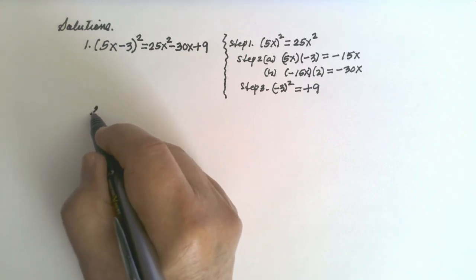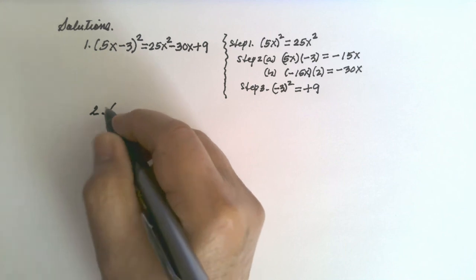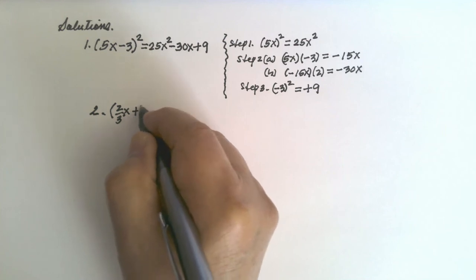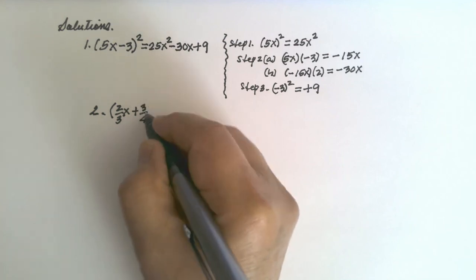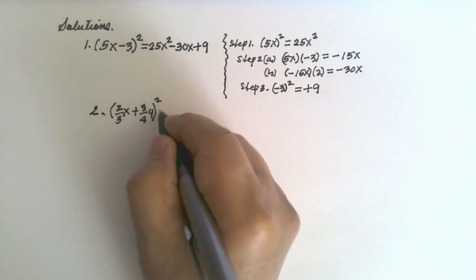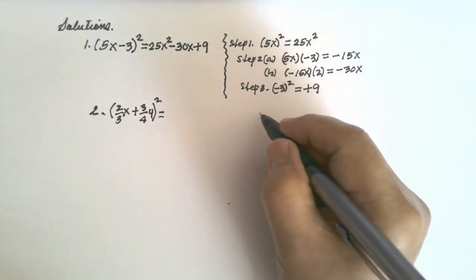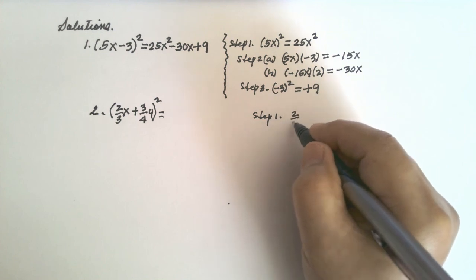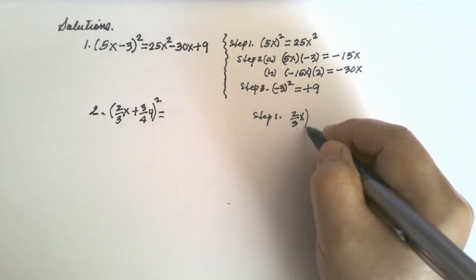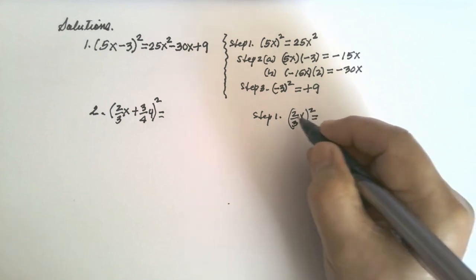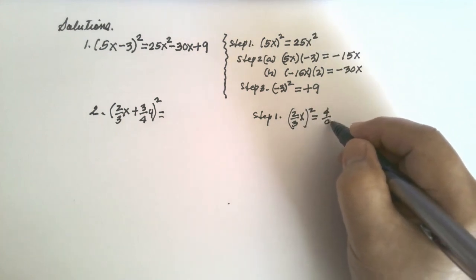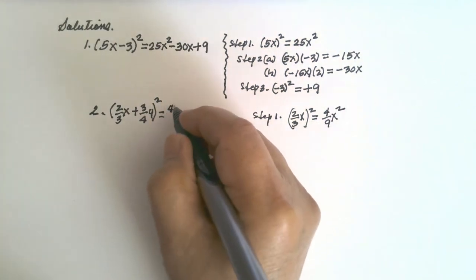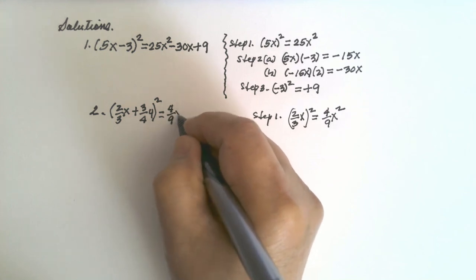Number two: (2/3 x + 3/4 y) squared. Step number one — square the first term: (2/3 x) squared equals 4/9 x squared.